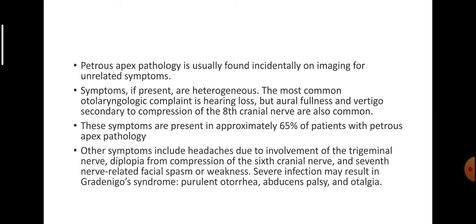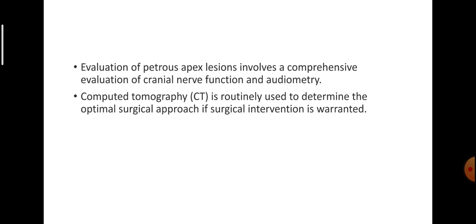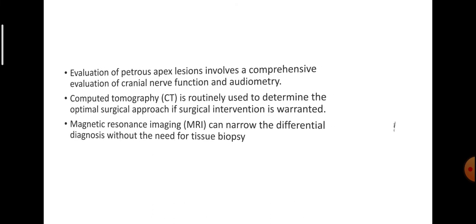Other symptoms include headaches from trigeminal nerve involvement, diplopia from 6th cranial nerve compression, and 7th nerve-related facial spasm or weakness. Severe infection may result in Gradenigo's syndrome — purulent otorrhea, abducent palsy and otalgia. Evaluation of petrous apex lesions involves comprehensive cranial nerve function assessment and audiometry. CT is routinely used to determine the optimal surgical approach, while MRI can narrow the differential diagnosis without tissue biopsy.